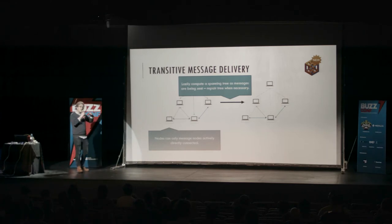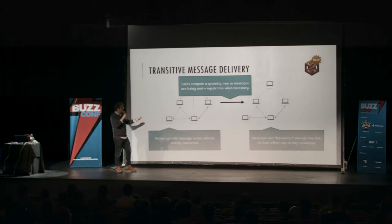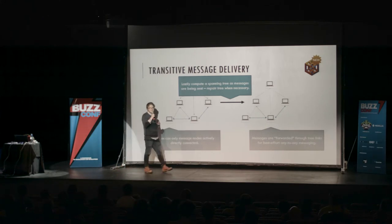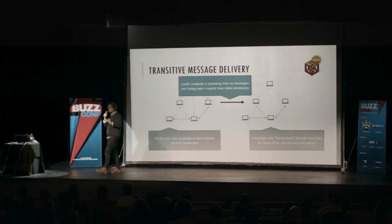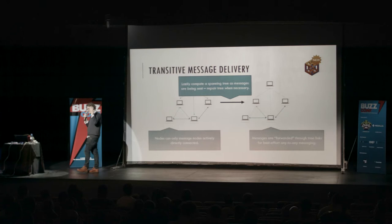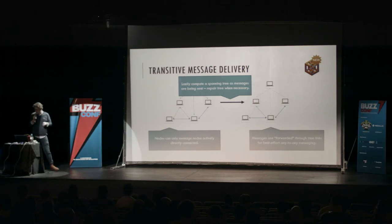Once we have this tree, constantly adjusting and repairing as the network churns, any node wanting to route a message to another node it can't directly reach can send it along the tree. The system uses best-effort delivery because under certain churn levels we may miss the node — if the node is churning as we reach the leaf it was connected to. This gets us pretty good reliability on message delivery under failures, but under bad network situations it can be problematic.